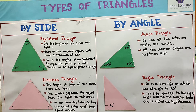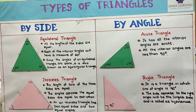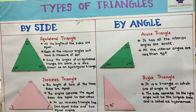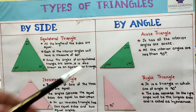We will see them one by one. First, the classification by side — the first one is equilateral triangle. As the name says, all the lengths of sides are equal, and the angles are also equal. Each of the interior angles will have a measure of 60 degrees. Since all the interior angles are equal, it is known as equilateral triangle or equiangular triangle.